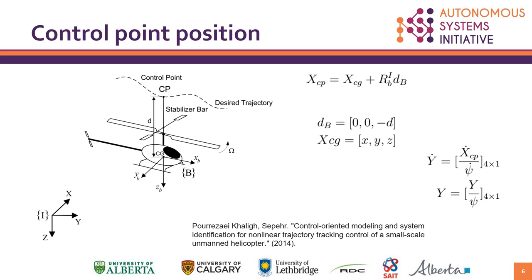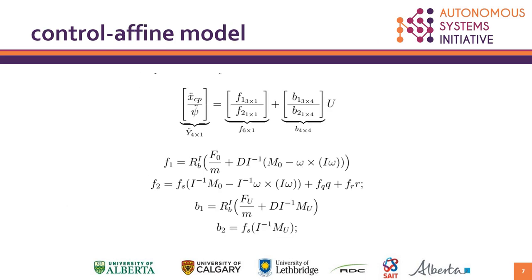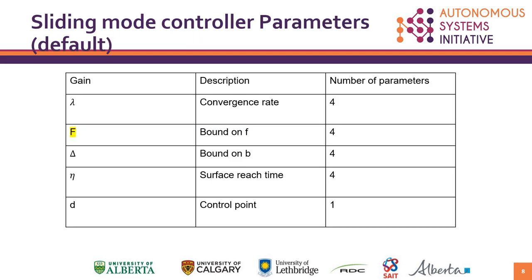Having six states and four inputs gives us an underlying system for the helicopter, which is actually the nature of a helicopter. In order to solve this problem, we define a control point above the helicopter, which is something that some other students have done previously. So instead of controlling the center of gravity, we control the control point position, and we also have the yaw added, giving us three states for the position of the control point and one additional state.